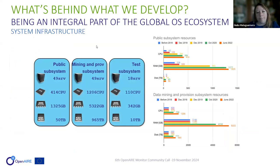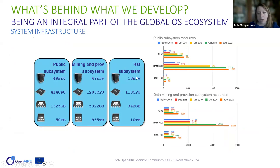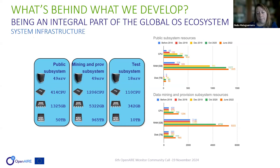Behind the Open Air Graph there are several services and subsystems we need: public subsystems, mining and provider subsystems, and test subsystems, which of course require computing support. At the moment, this computing system is from our partner OCM, which is based in Poland and is an Open Air member.